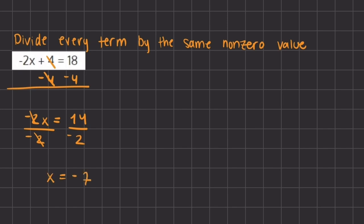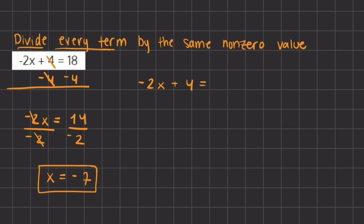A positive divided by a negative gives us a negative, so the final value of x is negative 7. We divided every term by the same non-zero value. Alternatively, if we started from the beginning, we could have also divided negative 2 across all terms in the expression first, then solved and isolated x that way. Each way is correct, and you can decide which is easiest for you. That was the dividing every term by the same non-zero value method.